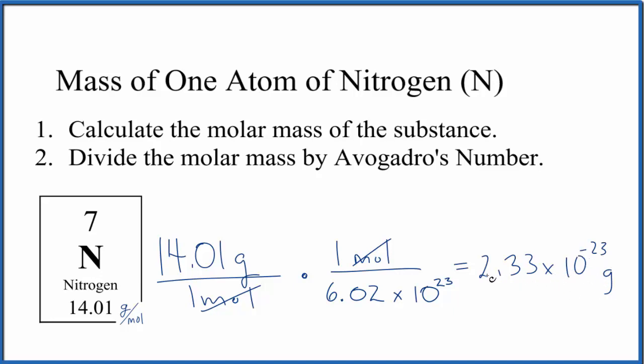If you wanted kilograms, you could divide this by a thousand. That would make it even smaller, 2.33 times 10 to the negative 26. Finally, if you had an isotope of nitrogen, say nitrogen-15 instead of the 14, you'd put this 15 in there and that would give you the mass of one atom of the isotope nitrogen-15.